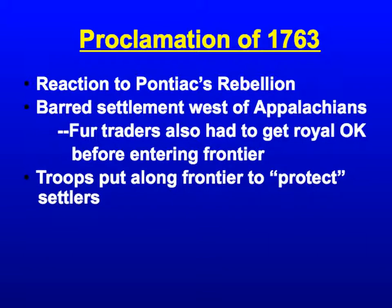A reaction to Pontiac's Rebellion was the Proclamation Line of 1763, which barred settlement west of the Appalachian Mountains. You were not allowed to cross those mountains without permission, which was rarely granted. Fur traders also had to get royal approval before entering the frontier. Troops would be stationed along the frontier to protect settlers. A lot of people were angry — they had helped fight the French and Indian War, and now they didn't have access to the lands they believed they deserved. It really just angered the colonists by cutting off settlement to the west.